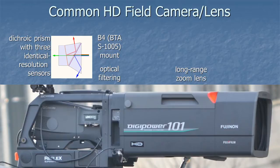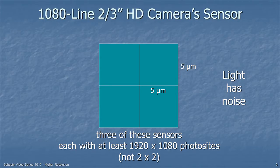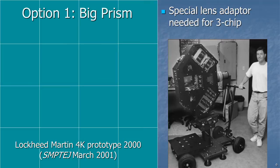The mount is sometimes referred to as a B4 mount. Each photo site on a 2/3-inch HD sensor — typically 1920 by 1080 — is about 5 microns on a side, which is not a bad size for collecting light because light has its own noise built in, so you want some averaging. If you want to change to a 4K camera, one option is to blow everything up and make it bigger. Lockheed Martin made a prototype 4K camera in 2000 using this technique — it was extremely big, needed a special lens adapter, and didn't go much further, except it did spark the 4K revolution.